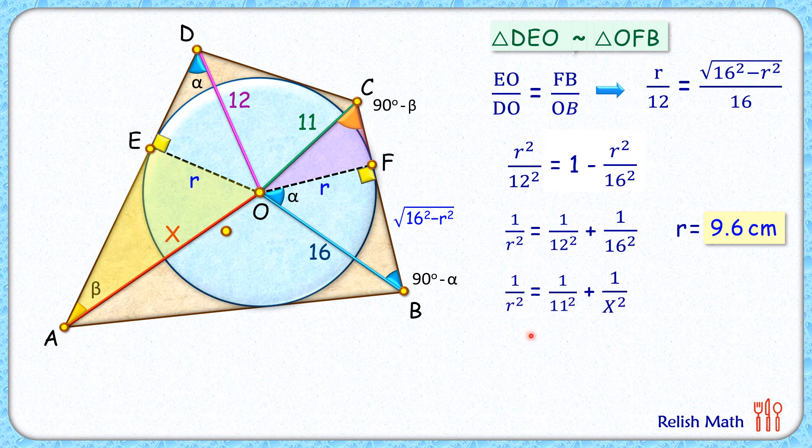Now here, both the LHS terms are the same, so RHS will also be equal. So 1/12² + 1/16² = 1/11² + 1/x². This is simple algebra. We can solve it to get the value of x as 19.66 centimeters, and that's our answer.